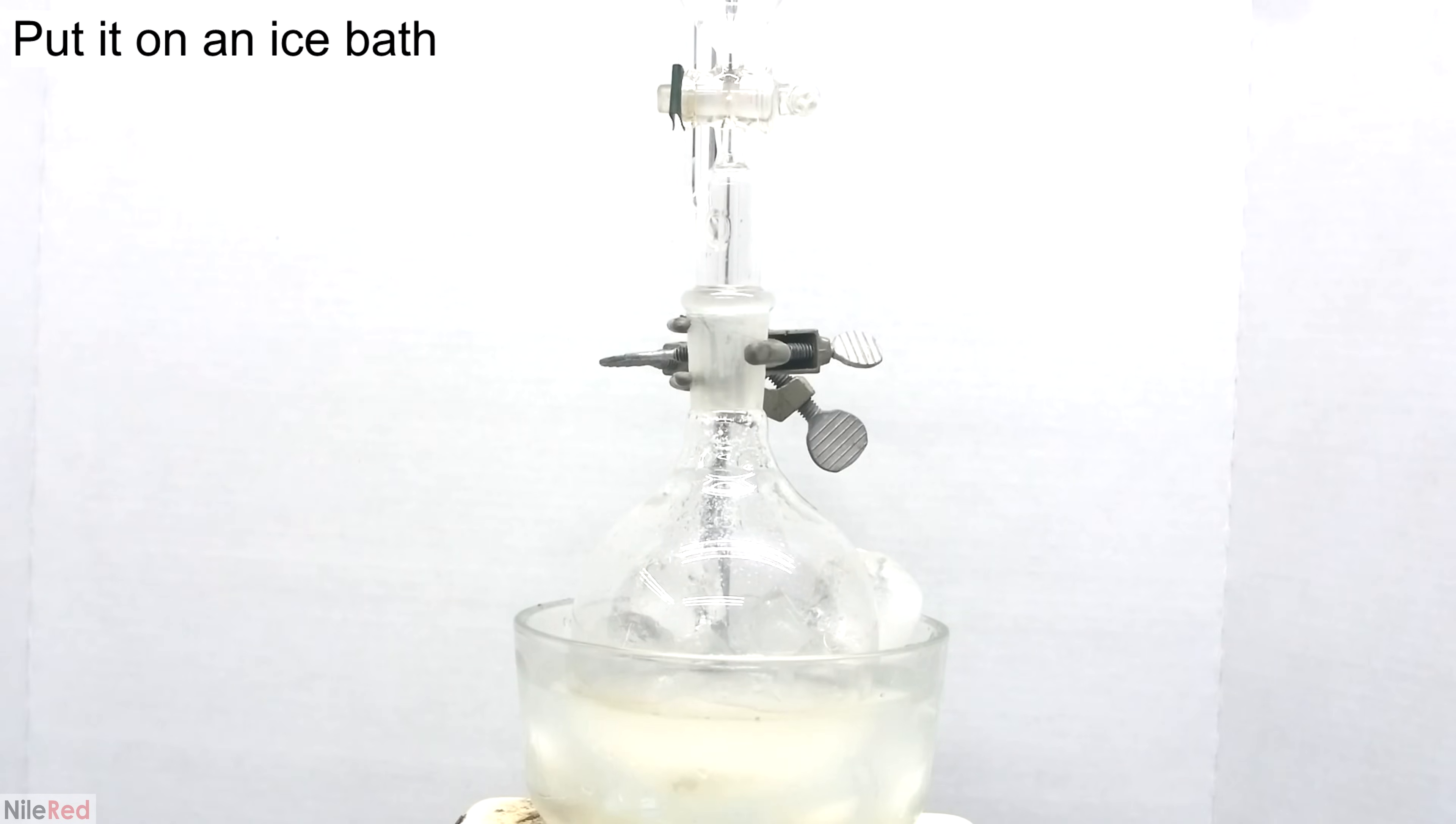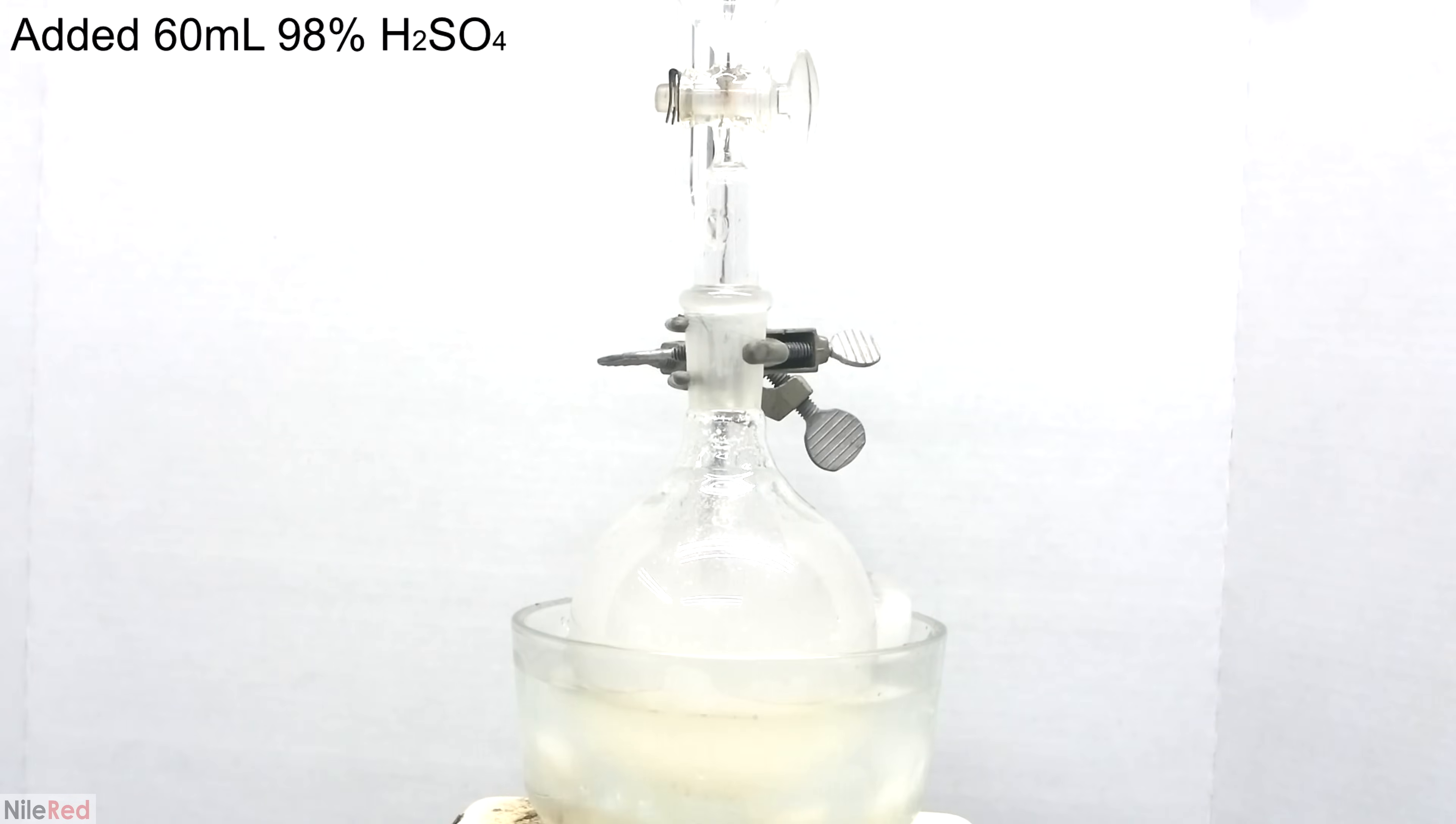The sodium bromide solution is then placed on an ice bath, and things are allowed to cool. Above the flask, I set up an addition funnel, and I slowly added 60 milliliters of concentrated sulfuric acid. The addition of the sulfuric acid releases a lot of heat, and it's important to keep the temperature as low as possible. In theory, we don't absolutely need an ice bath, but if things get too hot, we can actually start to produce bromine, which we really don't want.